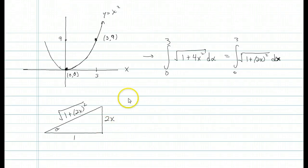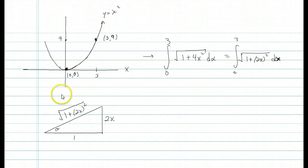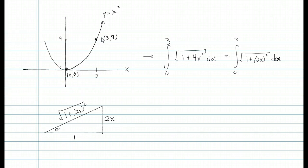I'm going to do one more example with trig substitutions. This time it's an application. As we saw before, we want to compute the arc length between two points on the graph of a function. We can do that with a certain definite integral — it's the square root of 1 plus the derivative of the function squared.